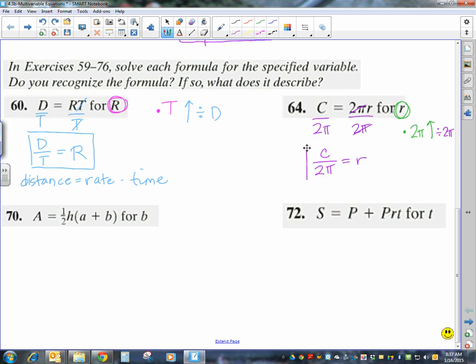And that gives me an answer of C over 2π is equal to R. Again, I have that R all by itself. And notice, again, this is a little r, and that's a capital R. So, you've got to keep it the way it is in the original problem. And we recognize, or should recognize, this is circumference equals π times twice the radius.